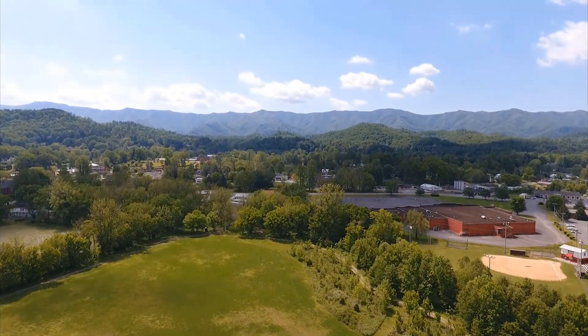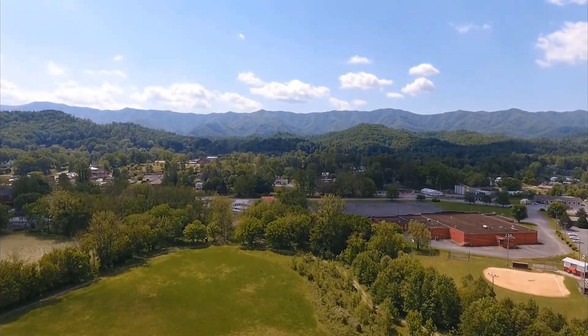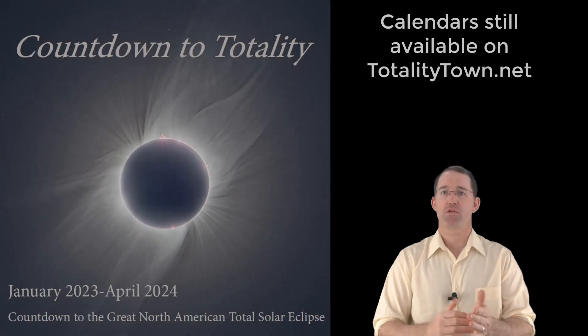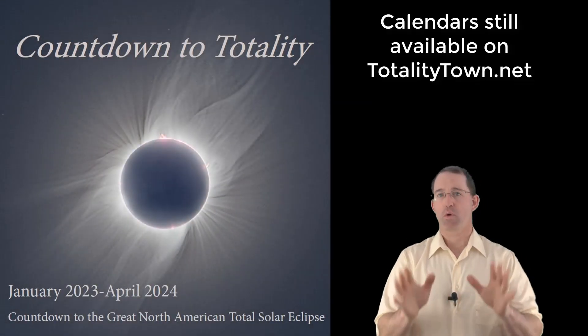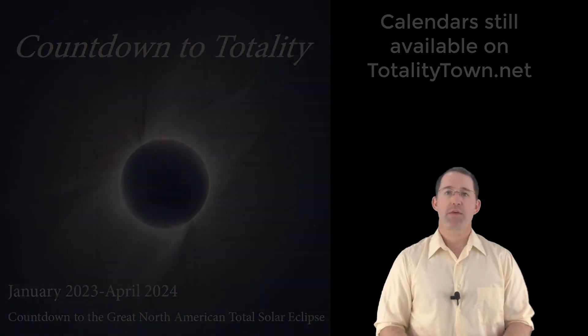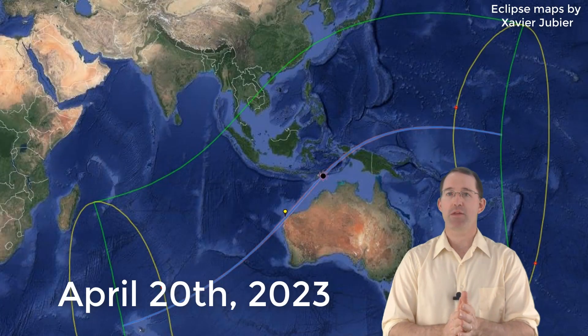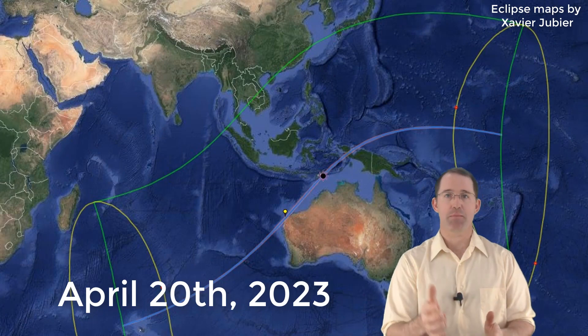Greetings and welcome to Totality Town. As we continue our countdown looking forward towards totality in 2024, we're going to do a quick review. One of the things I've learned as a teacher is that I should never assume people understand all of the vocabulary that's thrown around in astronomy. So this video is going to be a simple look at the different types of solar eclipses, and we're going to use the solar eclipse of April 20th, 2023 as our example.